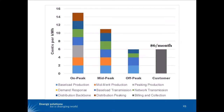Moving into the on-peak period all of the relevant costs used during that period, into the mid-peak period we would exclude the cost of peaking resources and peaking additions to the distribution system. The off-peak rate includes only base load resources, the distribution backbone, and then a fixed monthly charge for billing and collection costs.